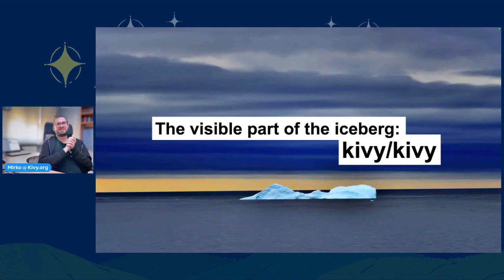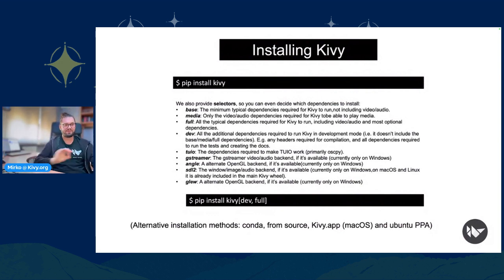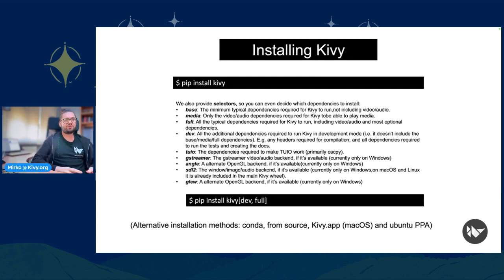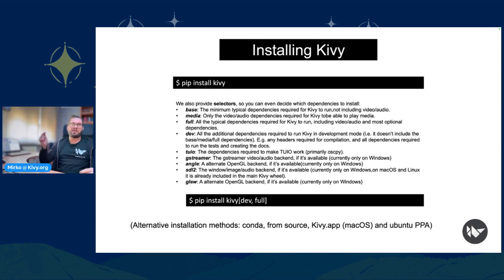Now the visible part of the iceberg — Kivy itself. Installation: pip install kivy is easy and effective. We also offer alternative installation methods such as conda, building from source, the Kivy app on macOS, or the Ubuntu PPA. We also provide selectors via pip so you can decide which dependencies to install — the base, media, or development dependencies. On Windows you can also select to use GStreamer or ANGLE, SDL2, and GLEW.